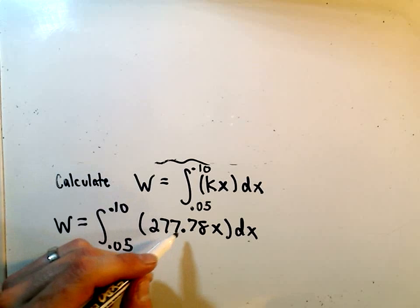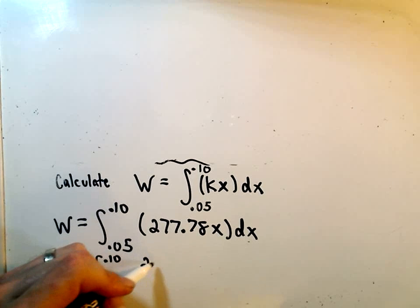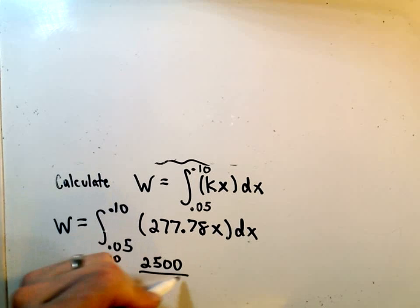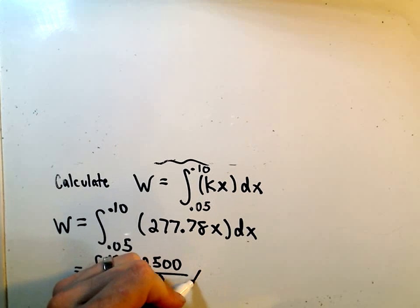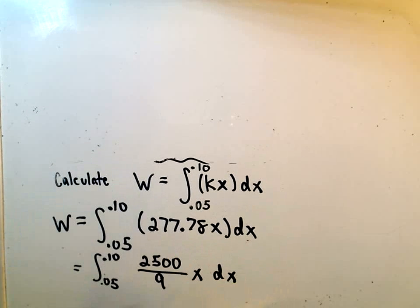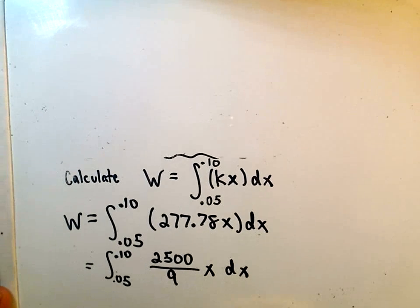277.78, if you convert that into a fraction, we can write that as 2500 over 9 times x dx. And I'm going to use the fraction to calculate it instead of the decimal because that's what I used. Feel free to use whichever one you want.